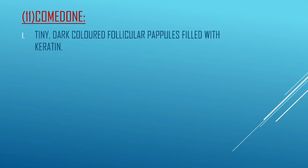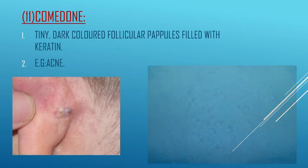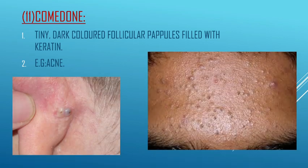Next are comedones — these we are all familiar with. They are tiny, dark-colored follicular papules filled with keratin and are mostly seen in acne. As you can see in the pictures, these are all filled with black-colored keratin.